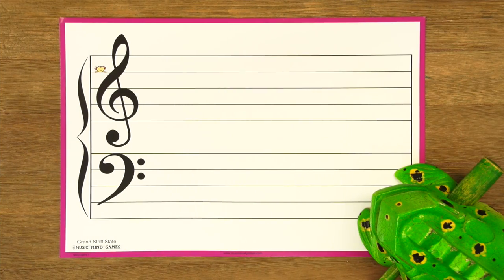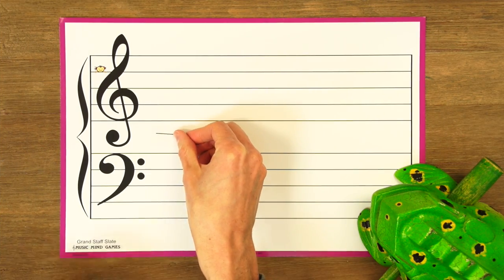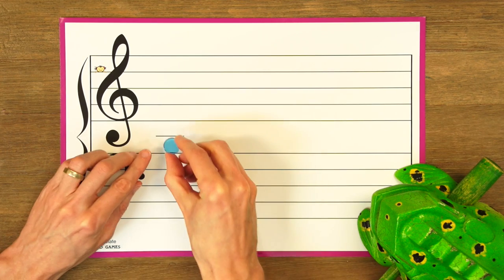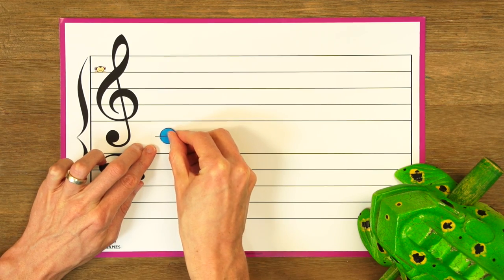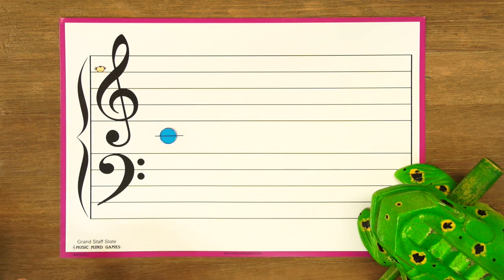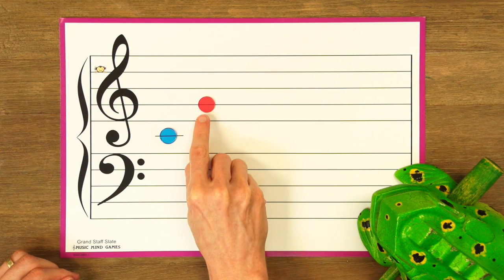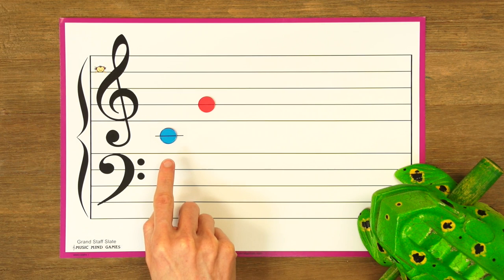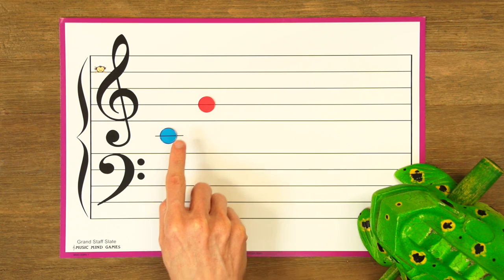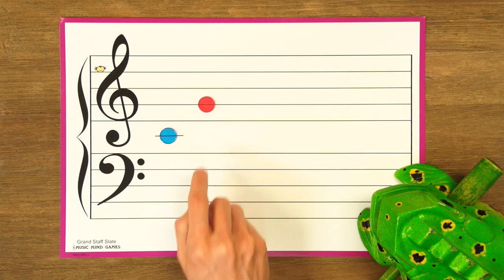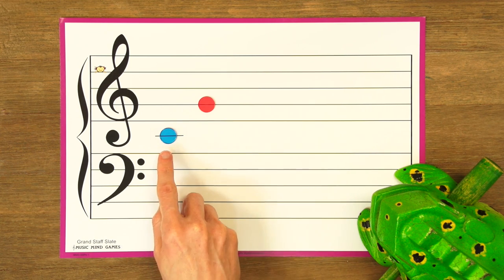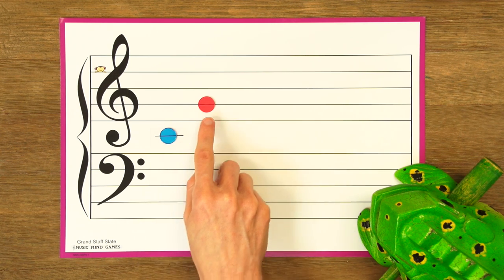Let's try and draw that on the grand staff. To draw DO SO on the grand staff, since we're in the C major pentascale today, we'll put DO on middle C here — DO — and then SO will be up here on the G line — SO. Can you point and sing the solfège with me? DO SO. Now let's say the letter names: C G.